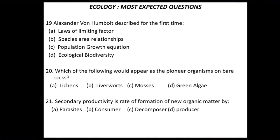Question 21: secondary productivity is the rate of formation of new organic matter by — four options are provided. Secondary productivity is studied at the consumer level, so it is the rate of formation of new organic matter by consumers.